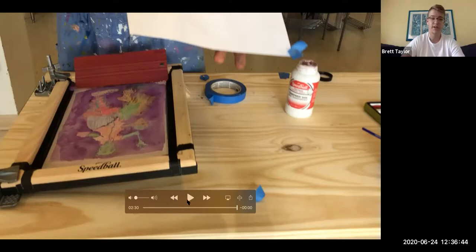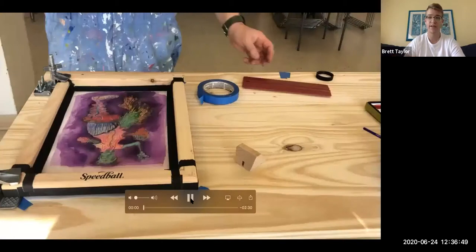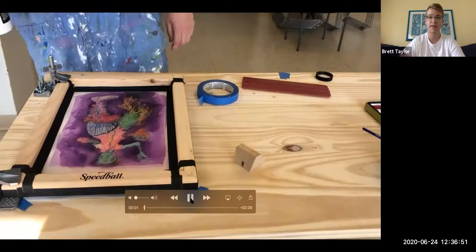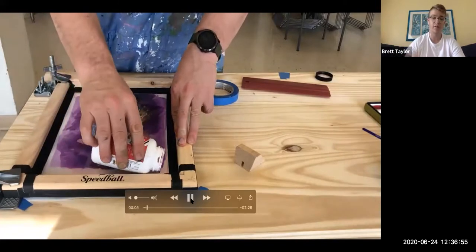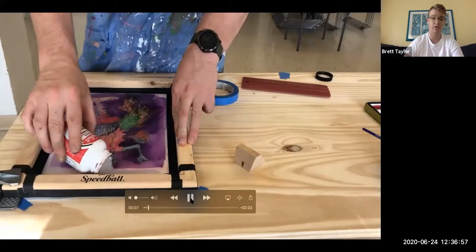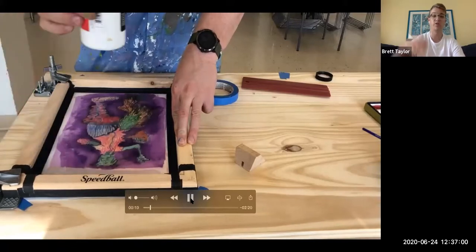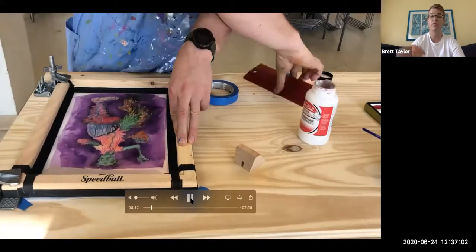If you want to pull your ghost, add more transparent base on top. If not, wash the screen thoroughly to make sure all that transparent base gets out of the pores of the screen, so you can paint your next layer on top of it.